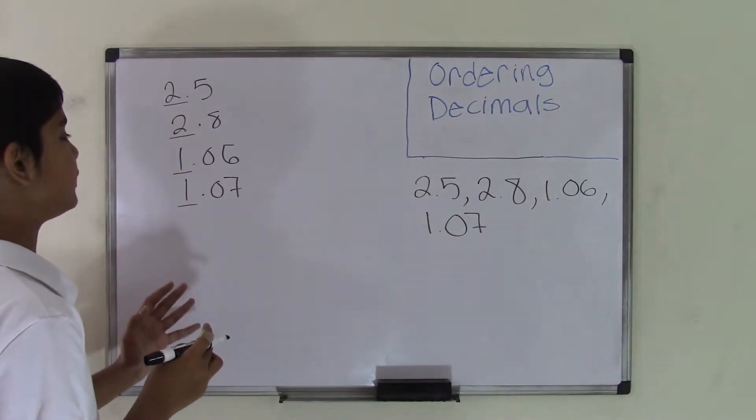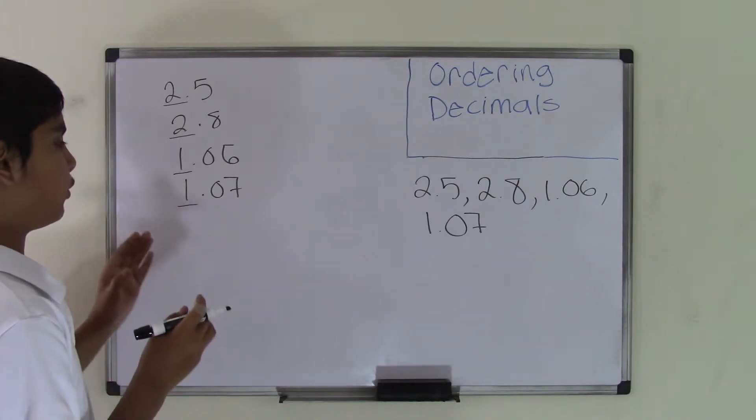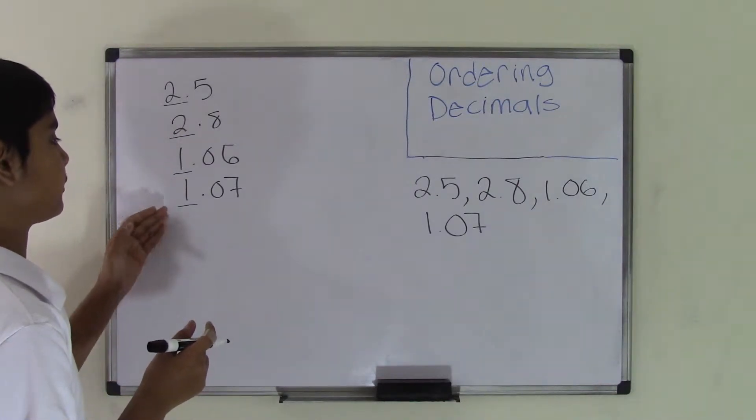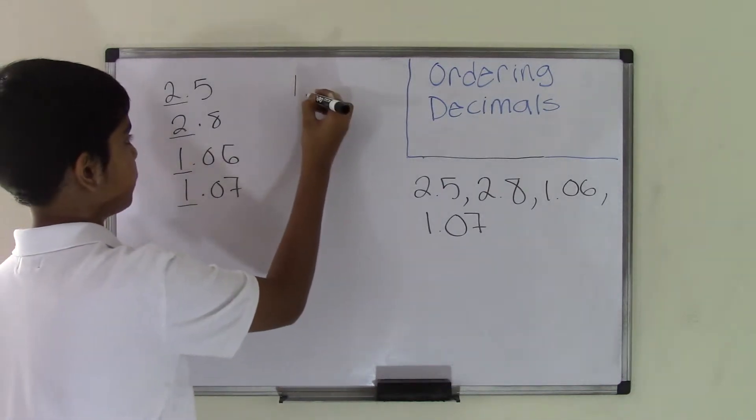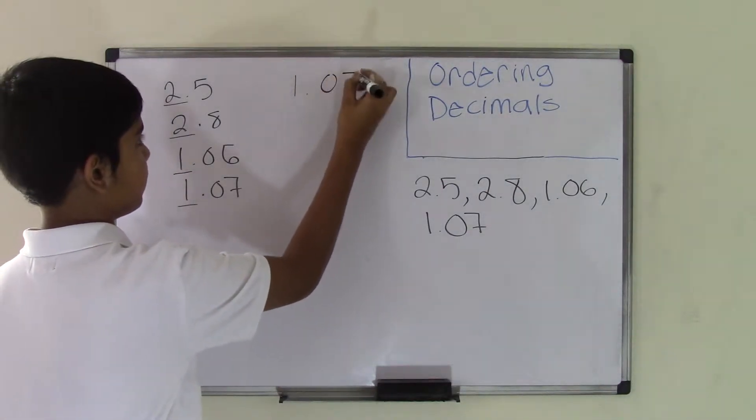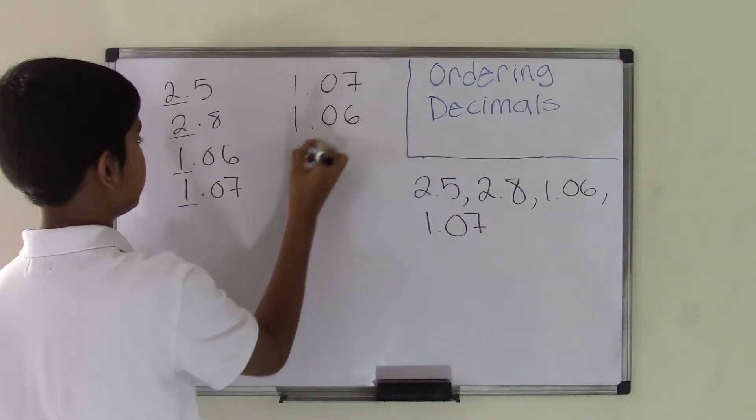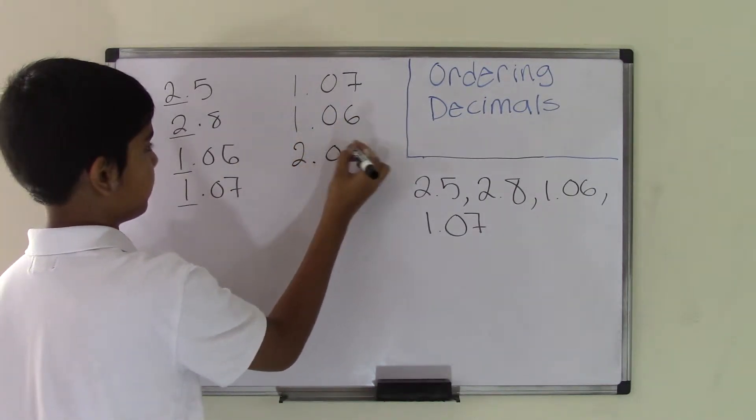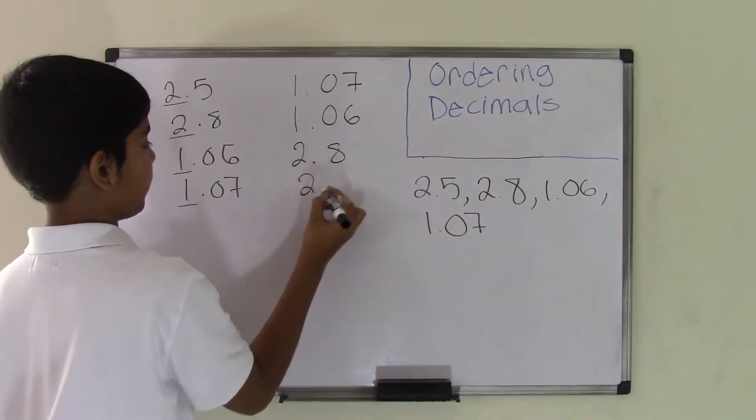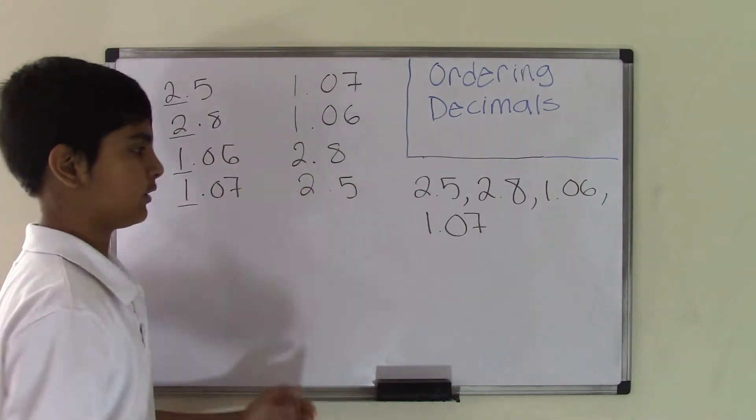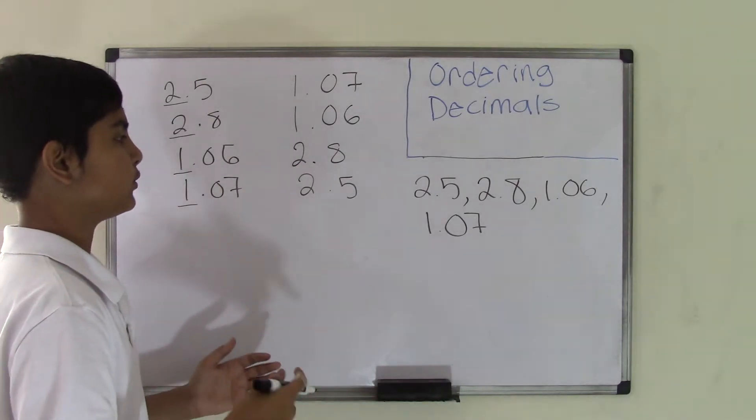Now we need to order them, and we know that since 1 is less than 2, the ones will go first: 1.07, 1.06, and then we can add 2.8 and 2.5. But wait, this is not done yet. We still need to go further.